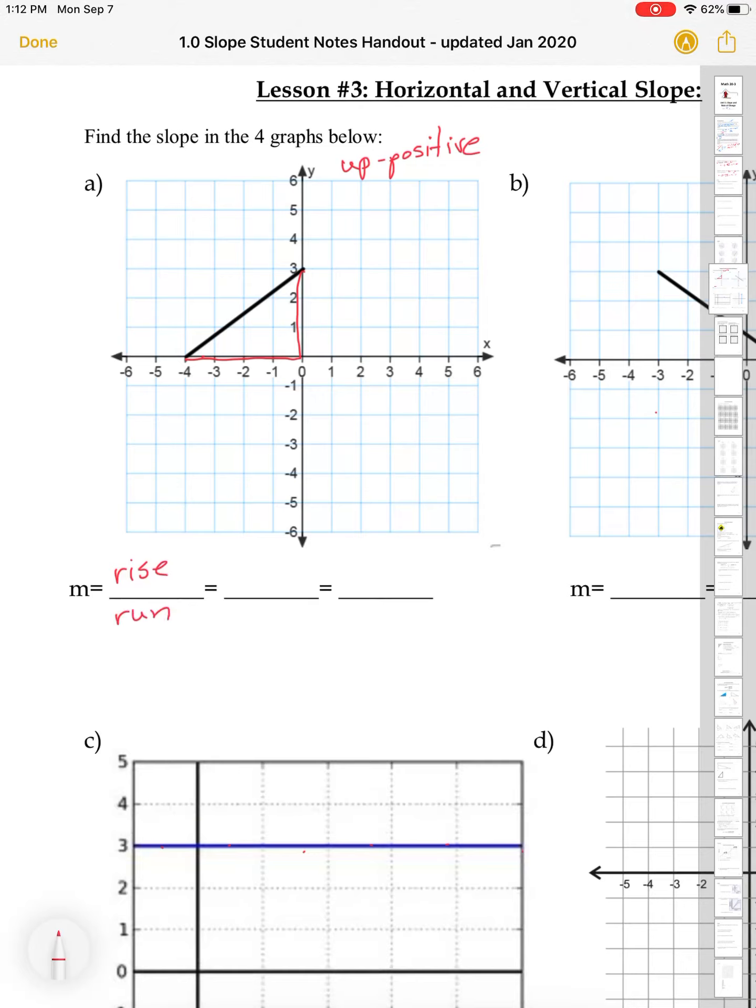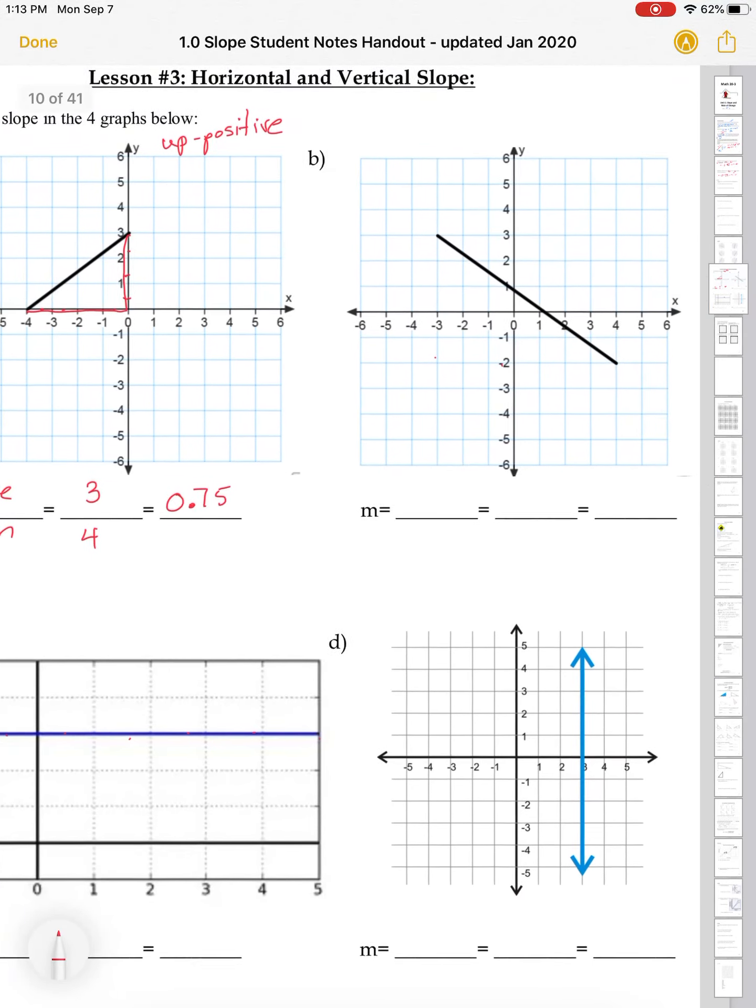And our rise, it goes up one, two, three. And it goes over, the run is one, two, three, four. So, and if I divide that, I'll get 0.75. So that would be our slope. Nice positive slope there.